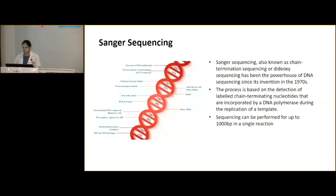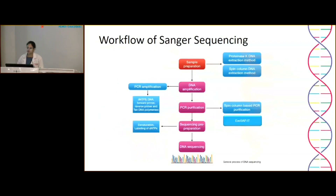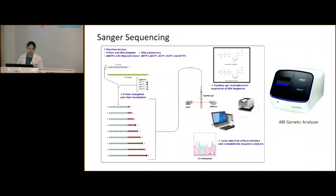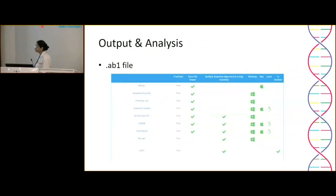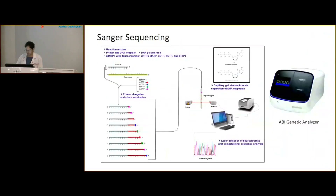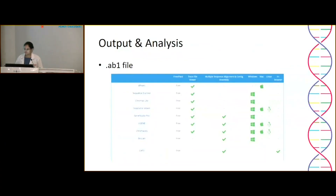Sanger sequencing was invented in the 1970s. It is a very robust technique, still being used in its original form with slight modifications in chemistry and detection. Each Sanger reaction can detect up to 1,000 base pairs. It has a very simple workflow, can be standardized in any lab, and is based on the chain termination method using dideoxy fluorescently labeled nucleotides. This is the instrument we have in our department for Sanger sequencing. It can be analyzed using easy, freely available software.